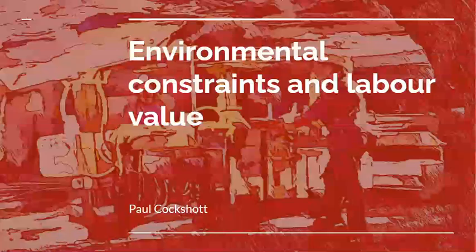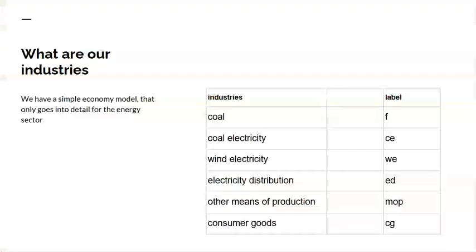I'm going to go through a worked example comparing an economy which produces electricity using coal with an economy which produces electricity using wind, and show how this would affect the value of things in terms of their labour content. I'm starting off with a very simple economy described by an input-output table with the industries: coal, electricity produced by coal, wind electricity, electricity distribution — that is to say, distribution of electricity to the final user, whether it comes from wind or coal or a combination of both — production of other means of production, because electricity is a means of production, and production of consumer goods.